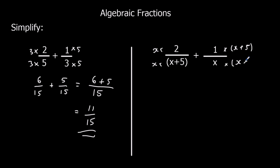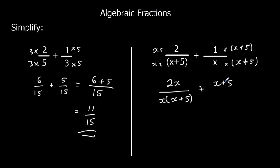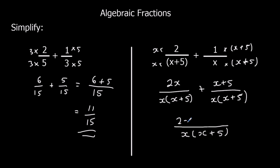As long as we do the same to the top and the bottom, we can manipulate fractions however we like. So here we've got 2x on top over x times x plus 5, and here we've got x plus 5 — 1 times it — and on the bottom, x times x plus 5. Now we've got two denominators the same, so we can make them one fraction over x times x plus 5, and we've got 2x plus x plus 5.